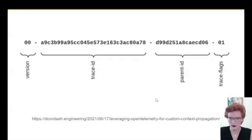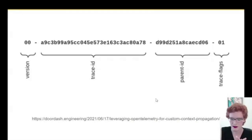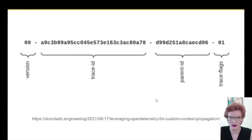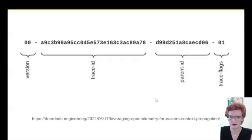Every component of an OpenTelemetry trace, including the trace itself, has a randomly generated ID. Those IDs are put into this HTTP header when requests move from one service to another. The four components are: version (always 00 for now since the RFC hasn't been formally accepted), trace ID (identifier for the whole collection of spans), parent ID, and trace flags. If a customer sends your system a request, that request will have one trace ID for the whole thing, and all subsystems share that trace ID but have different span IDs for their individual pieces.